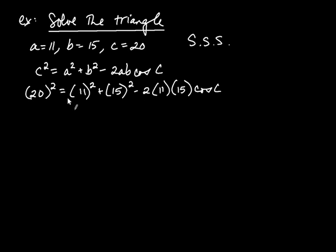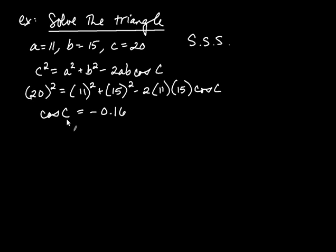Plugging in: 20 squared equals 11 squared plus 15 squared minus 2 times 11 times 15 times cosine of C. After evaluating and isolating cosine of C, I find cosine of C is equal to negative 0.16. Since cosine is negative, the angle is larger than 90 degrees — this implies we have an oblique triangle. Using the calculator, C is about equal to 99.4 degrees.